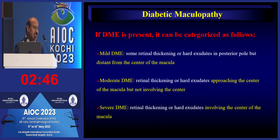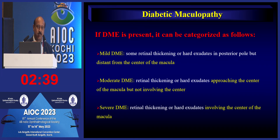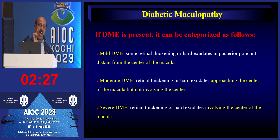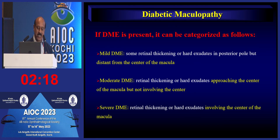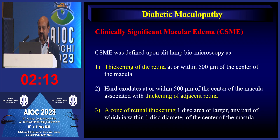Diabetic maculopathy can be mild, moderate, or severe, depending on how much the center of the macula is affected. Although hard exudates are visible, it is retinal thickening that is the most important sign, and this can only be detected by slit-lamp biomicroscopy with a 90-diopter lens examination. You must be well versed with this examination technique.